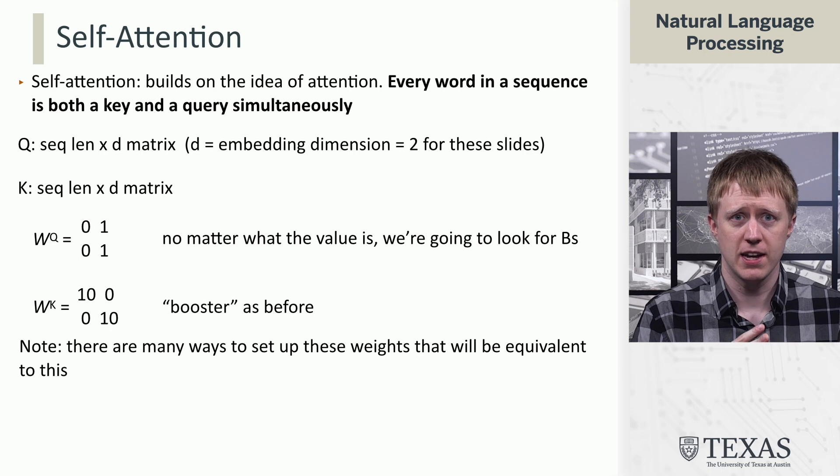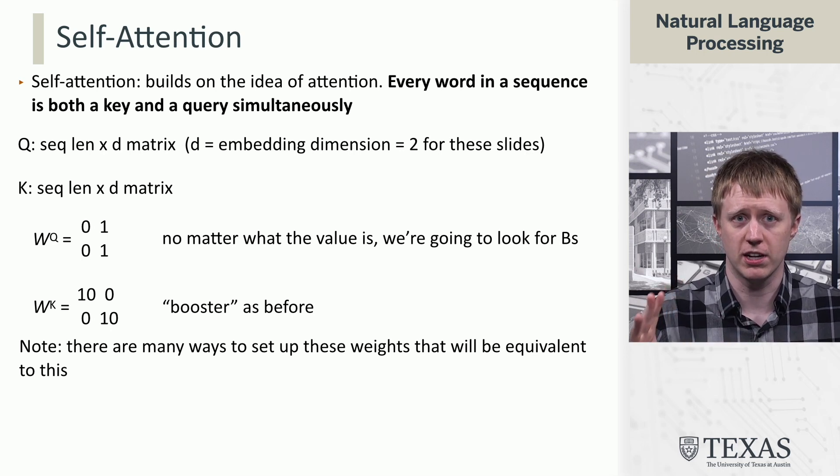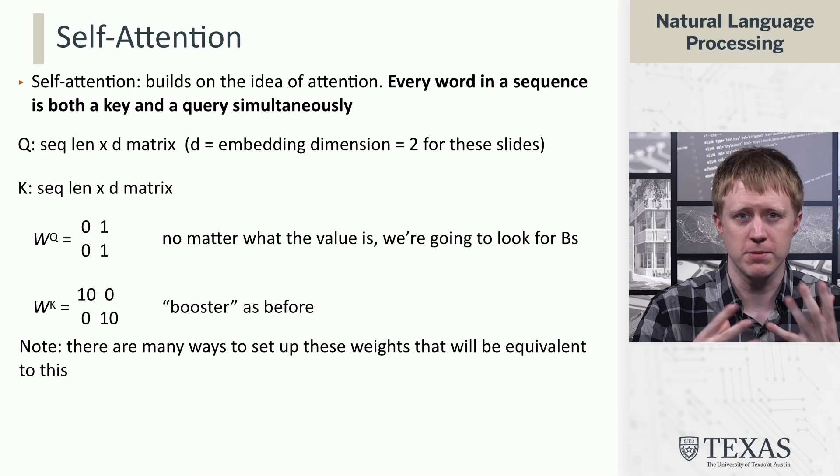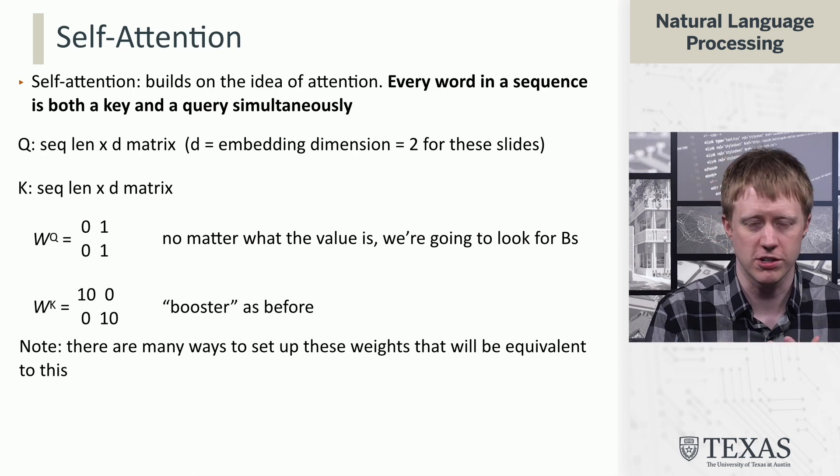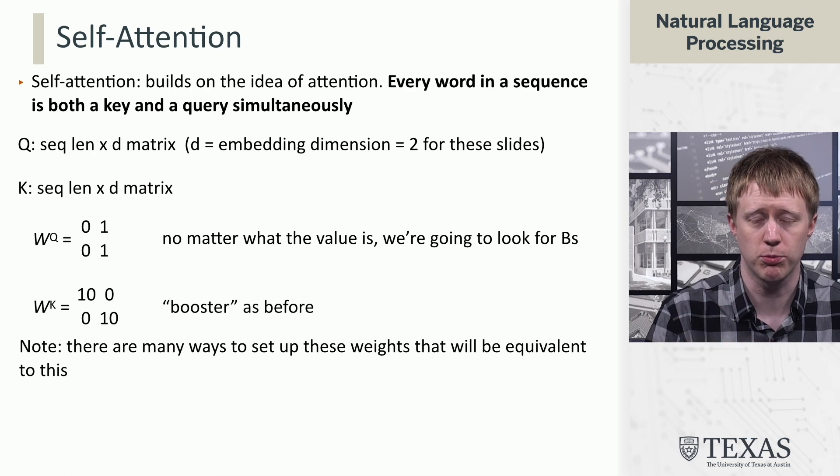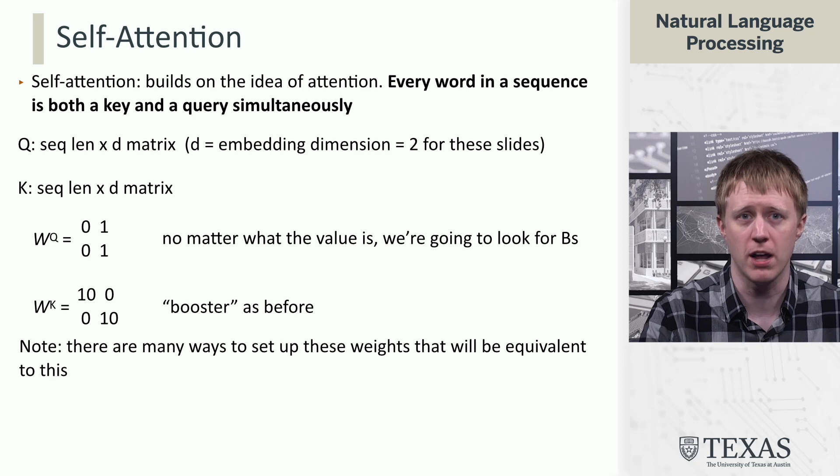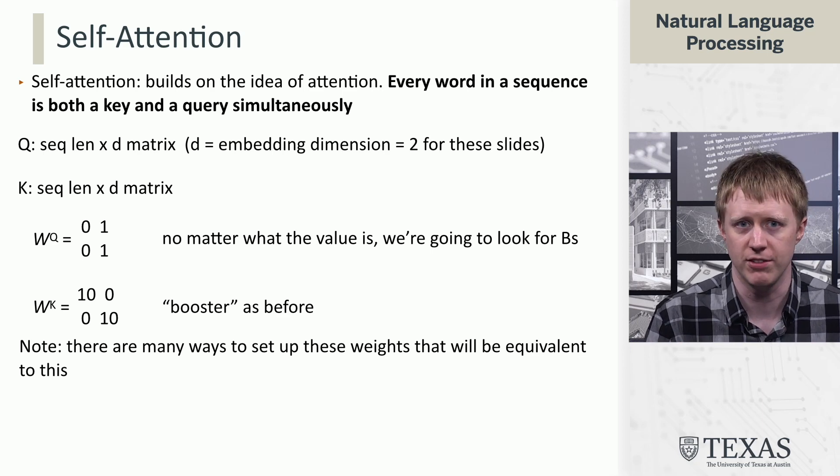Because we're multiplying Q and K by these two matrices, and because ultimately they're going to get multiplied by each other, there are actually many different equivalent parameterizations that are going to do exactly the same thing. I'm just setting up this one to illustrate things, but in reality what a model learns through backpropagation is not going to have this nice clear structure.